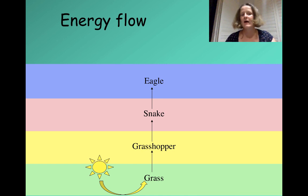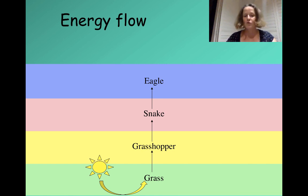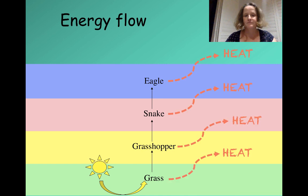Let's think about how energy flows through our food chain. The input energy comes in the form of sunlight energy, and that's captured by the producer — by the grass in this example — inside the food molecules. The food molecules are then passed on from organism to organism, so the energy is passed through the food chain, represented by the movement of the arrows. But at each level, we lose energy in the form of heat.